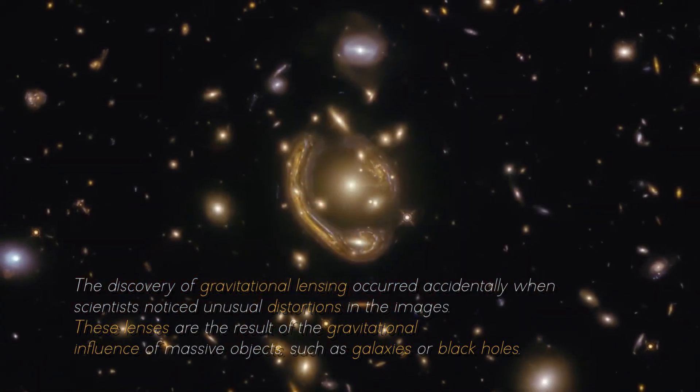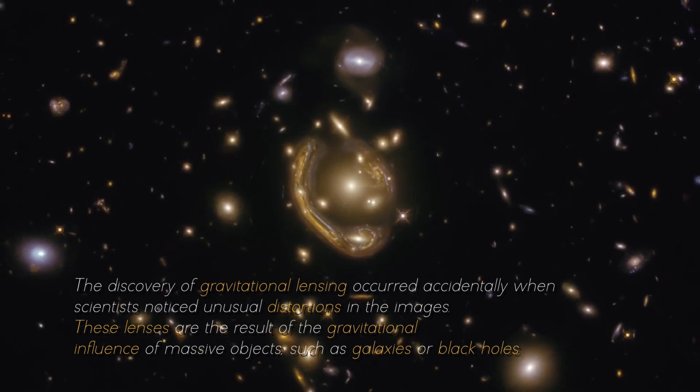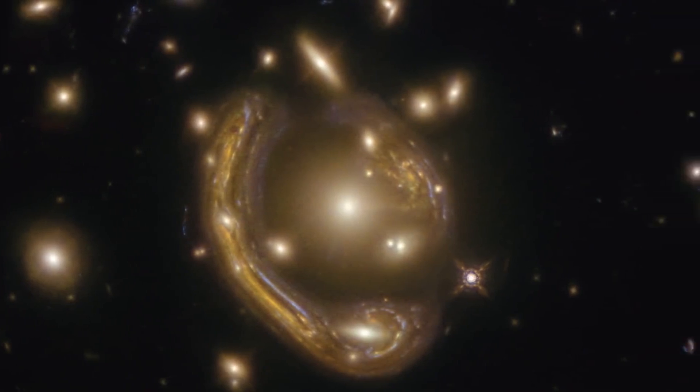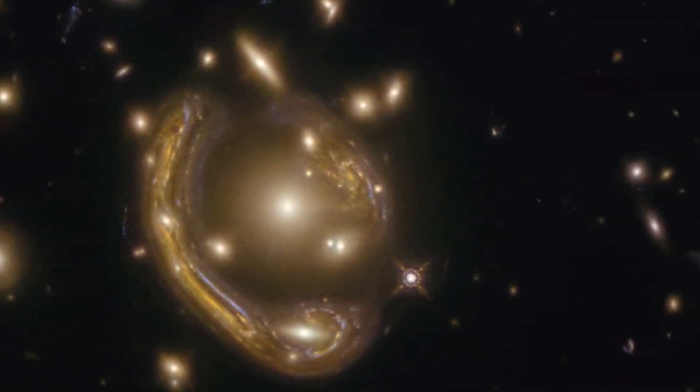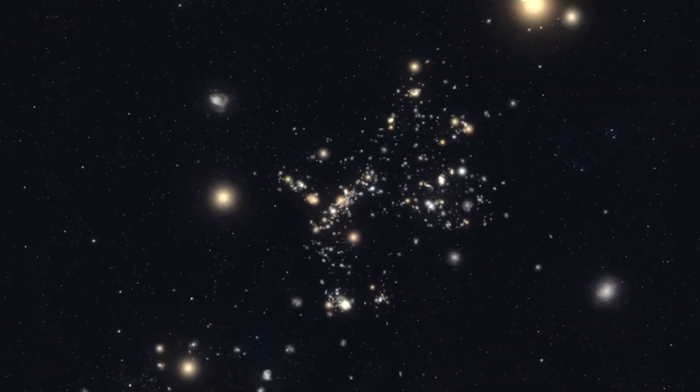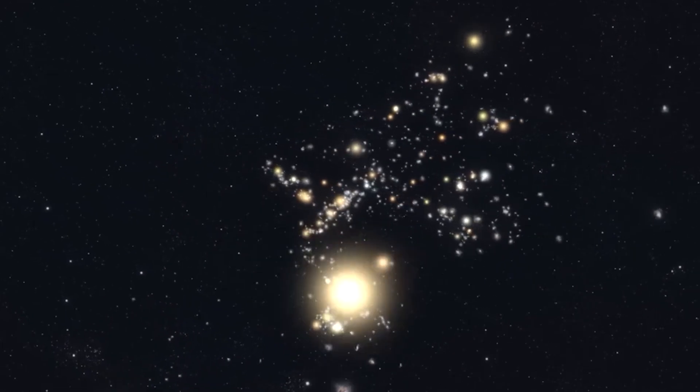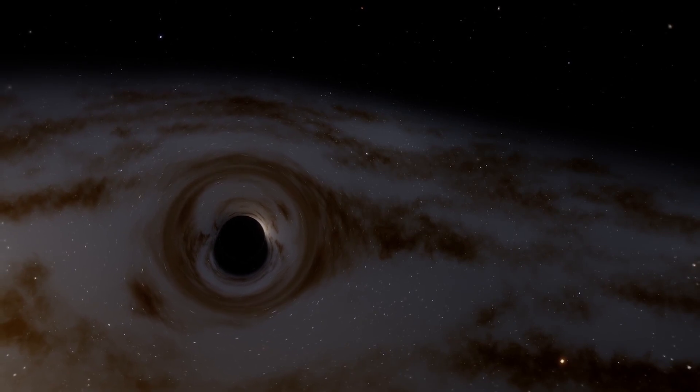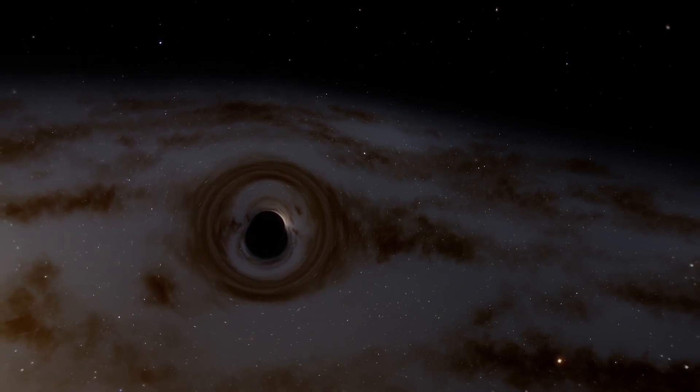These lenses are the result of the gravitational influence of massive objects such as galaxies or black holes, bending the light from smaller, more remote objects in the background of an image. This simple but powerful cosmic coincidence has allowed researchers to identify galaxies and exoplanets that would otherwise be invisible. The ability to harness this technique offers the opportunity to look further back in cosmic time and finally unlock the mysteries of black holes and possible extraterrestrial intelligences at the dawn of the universe.